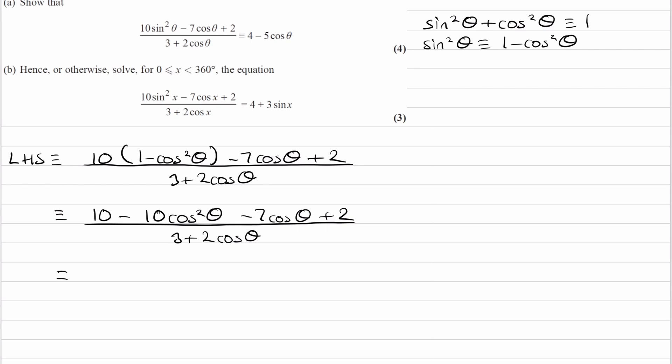And I'm also going to factorize out a minus sign, just so it's easier to factorize that quadratic. The minus 10 cos squared theta becomes 10 cos squared theta. The minus 7 cos theta becomes positive 7 cos theta. The 10 and the 2 become 12, but then we're taking out a minus sign, so that now becomes minus 12. And that's all divided by 3 plus 2 cos theta.